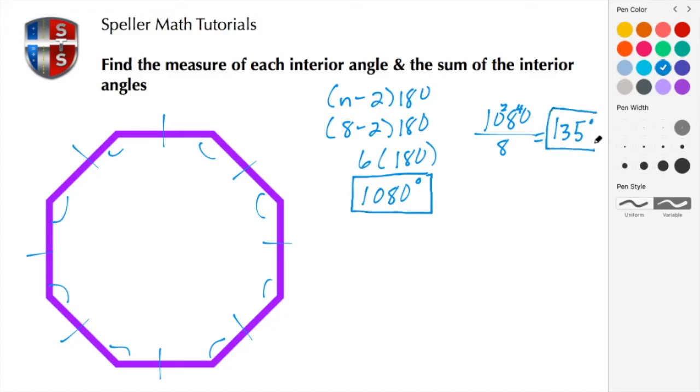So here we see the measure of each individual angle is 135 degrees. And one last technique is to create a series of triangles on the inside of this regular polygon and then count up those triangles and multiply by 180. So let's go ahead and do that.